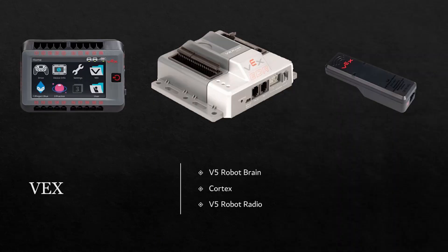Finally, we have VEX. The VEX V5 robot brain is their central control module and power distribution system. Components are connected through telephone cable to the ports on the robot brain. The robot brain is relatively new and boasts a touchscreen panel.